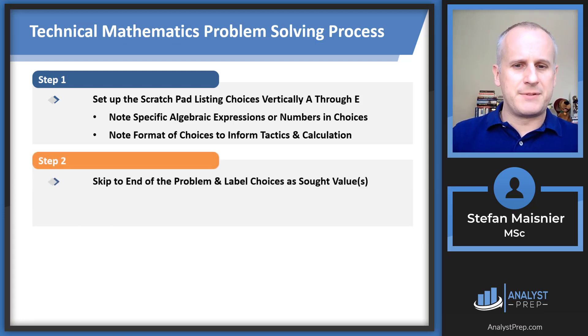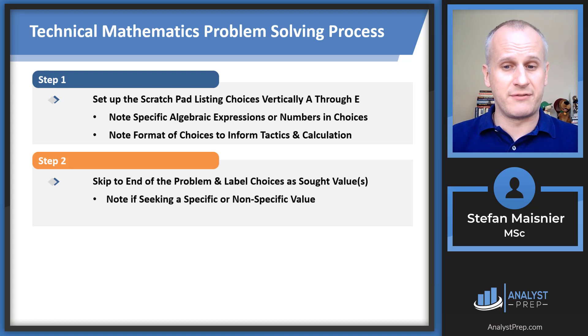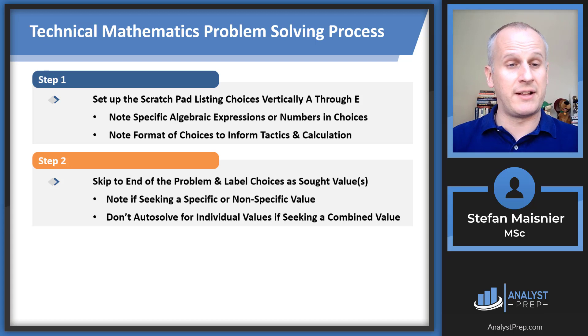Then, step two, skip to the end of the problem. Label the choices as your sought values, depending on how they're being asked for. Note if you're seeking a specific or nonspecific value. And don't auto-solve for individual values if you're seeking the combined value. For instance, there in that geometric problem, we don't even know which is the length and the width. It doesn't matter. And there are problems where they ask for area or a combination of variables where it can be really onerous or impossible to solve for the individuals definitively, but the combination is absolutely certain. So beware of auto-solving for individual values if the problem is seeking some sort of combination algebraically.